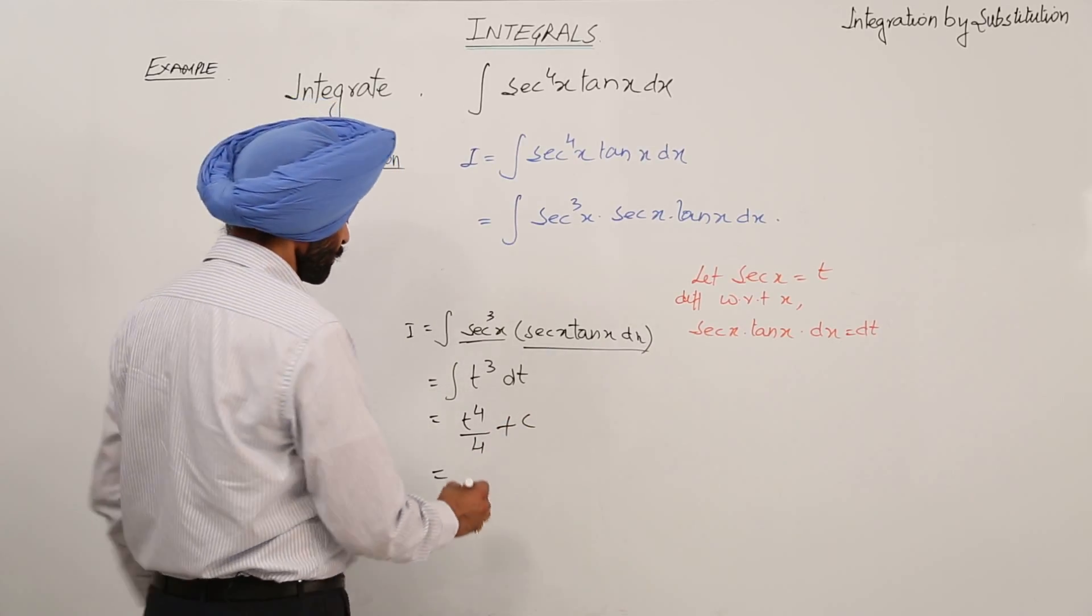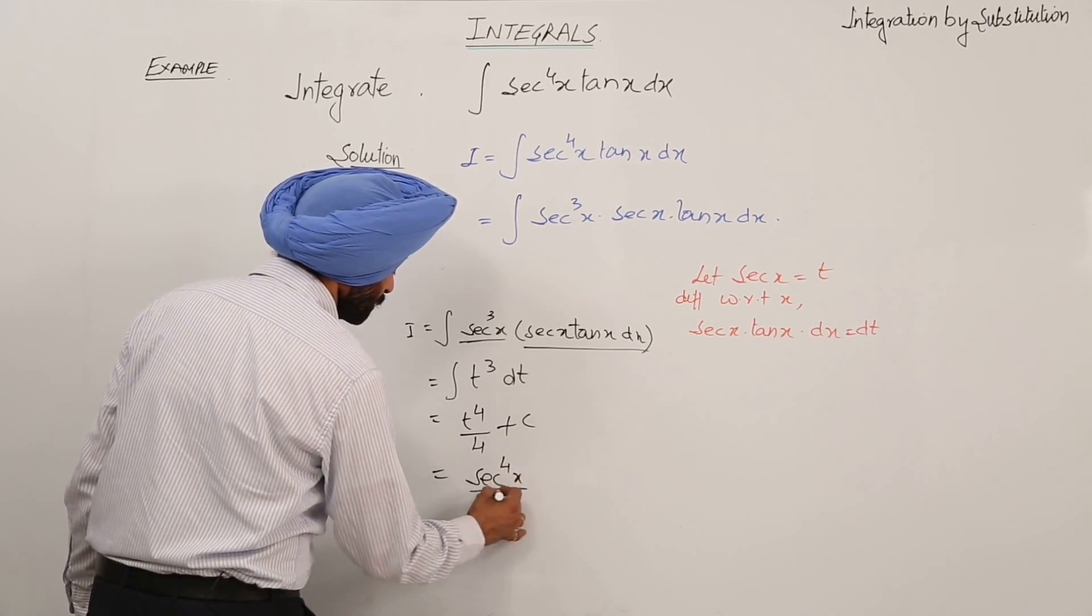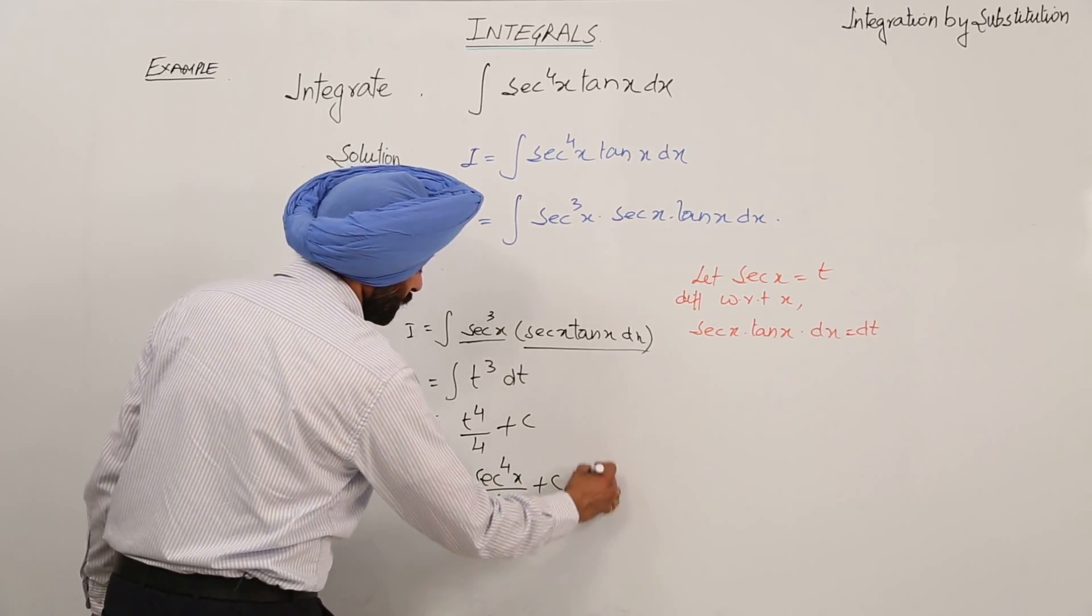Now what is t? Secant x. So we are having secant raised to power 4x upon 4 plus c as the answer.